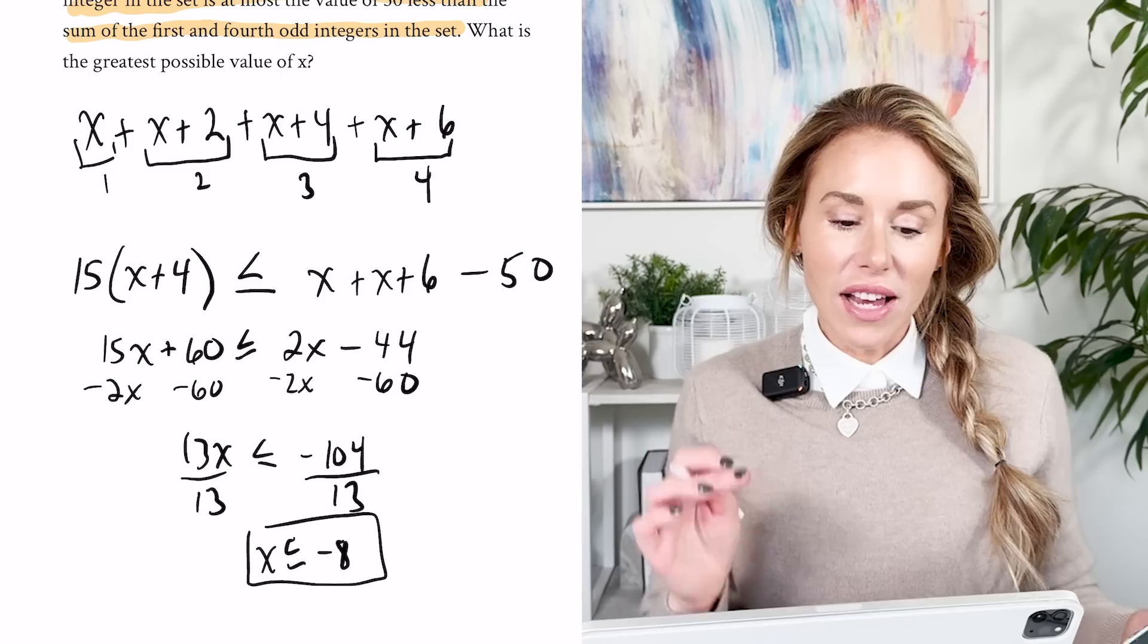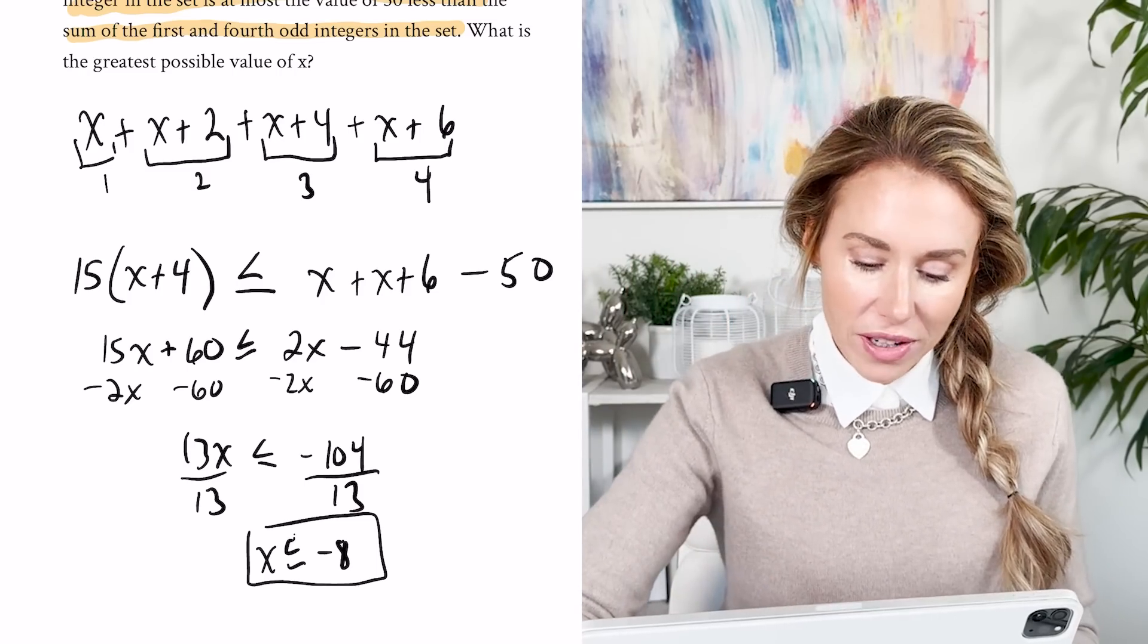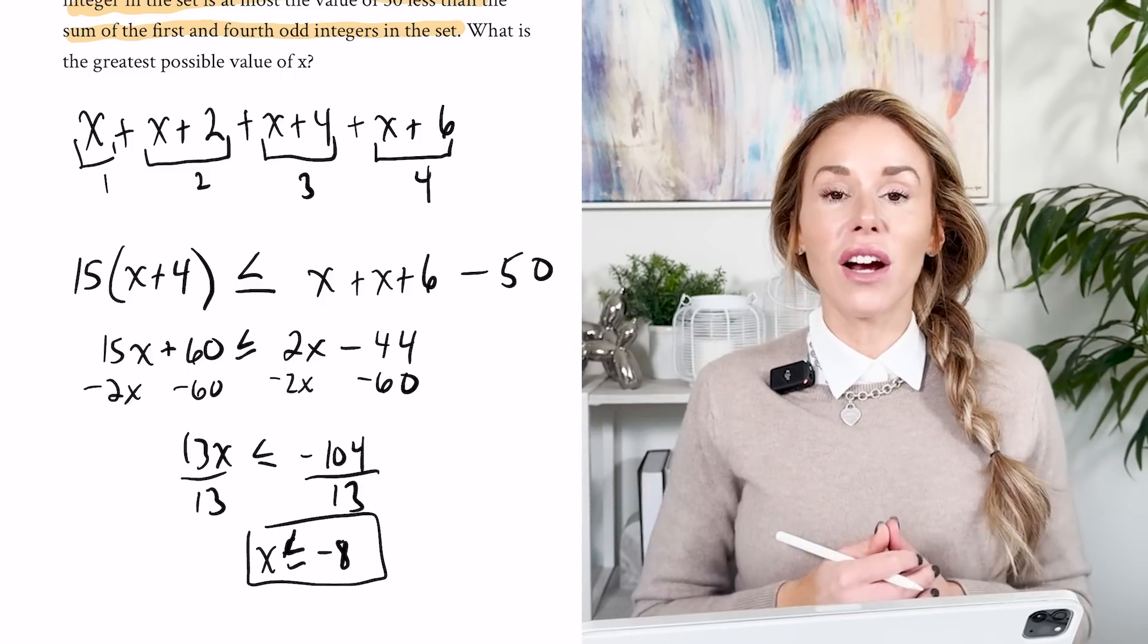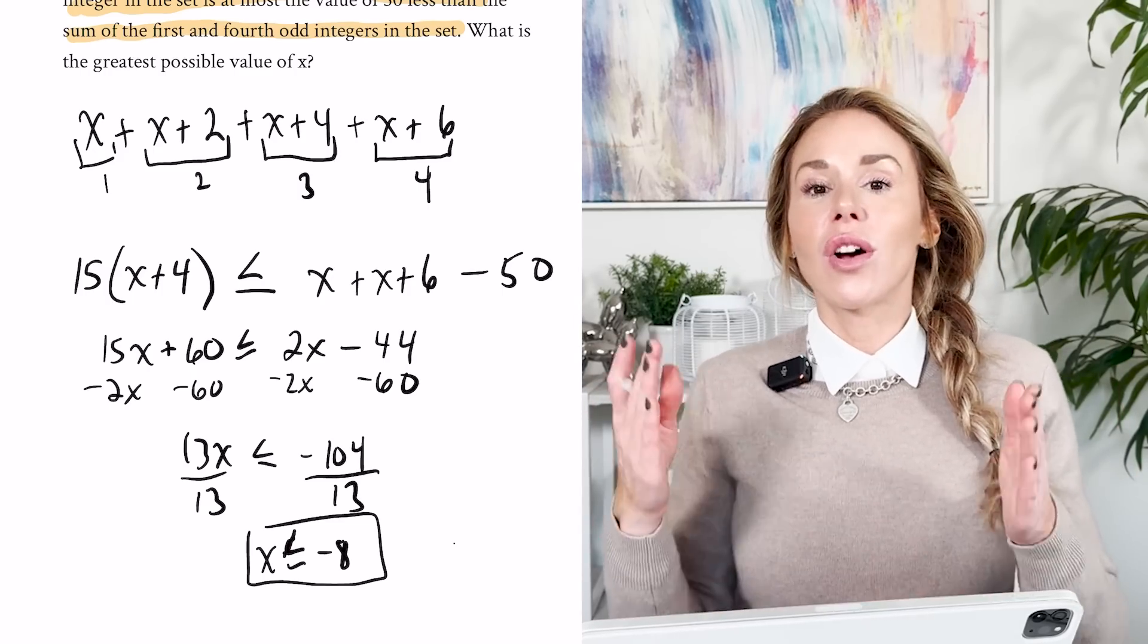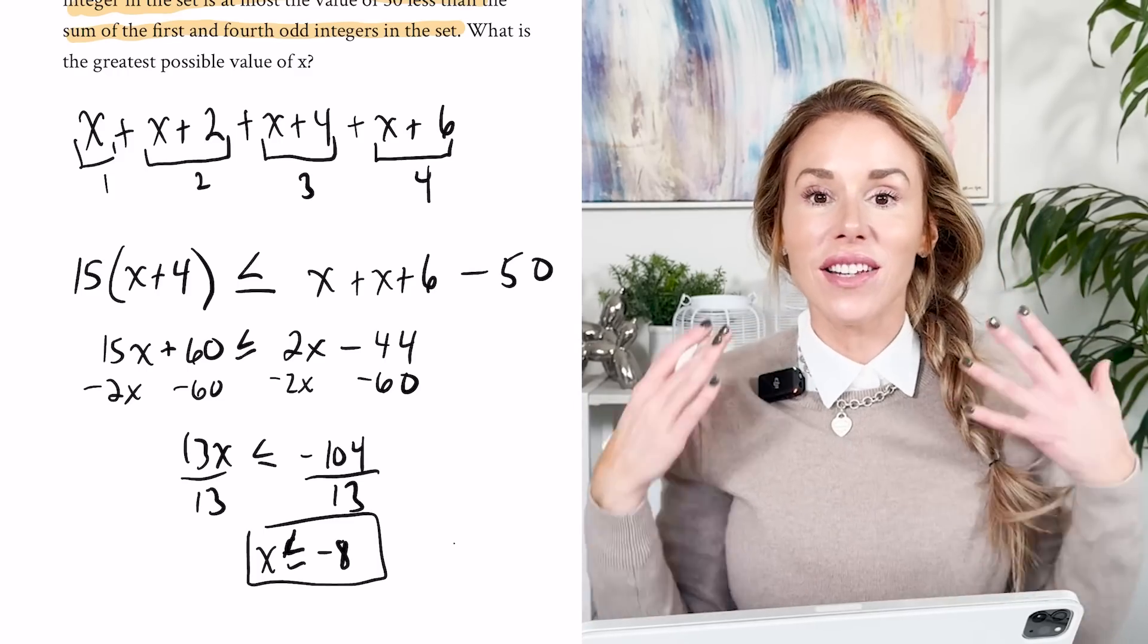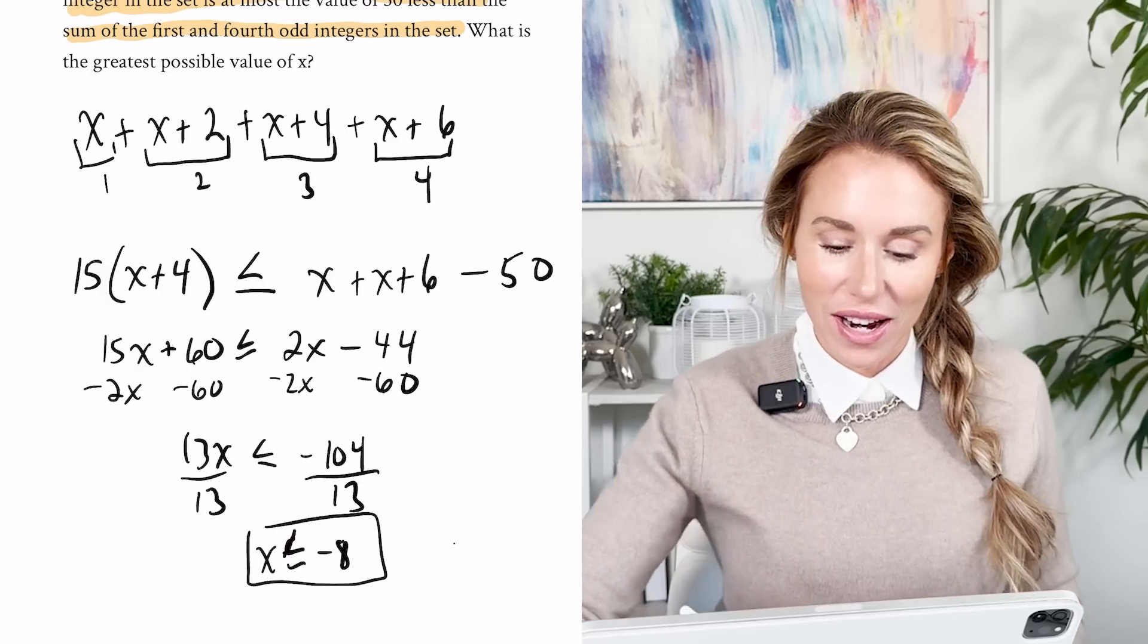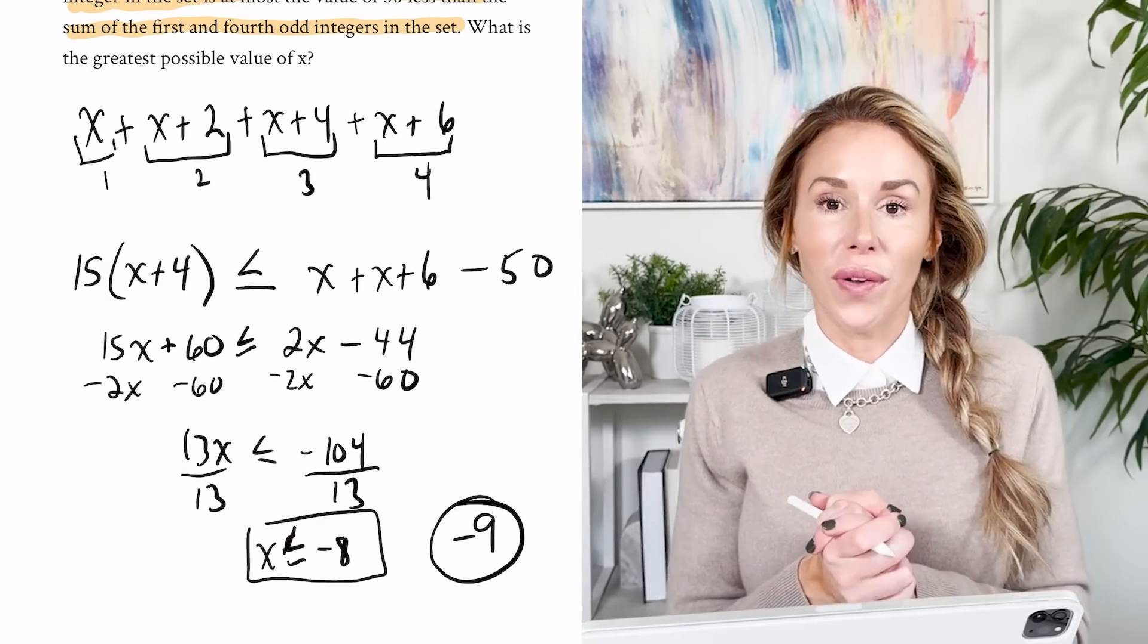Okay, so x is less than or equal to negative 8. Now here's the thing. They said x is odd. So when they're asking for the greatest possible value of x, be careful. You can't tell them negative 8. That's not an odd number. So we're going literally from negative 8 down. So the greatest odd number after negative 8 is going to be negative 9. So that's the answer you're going to want to fill in.